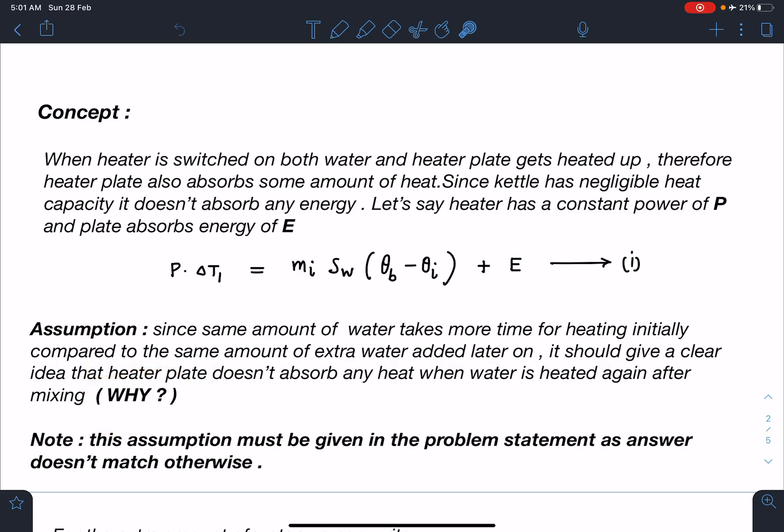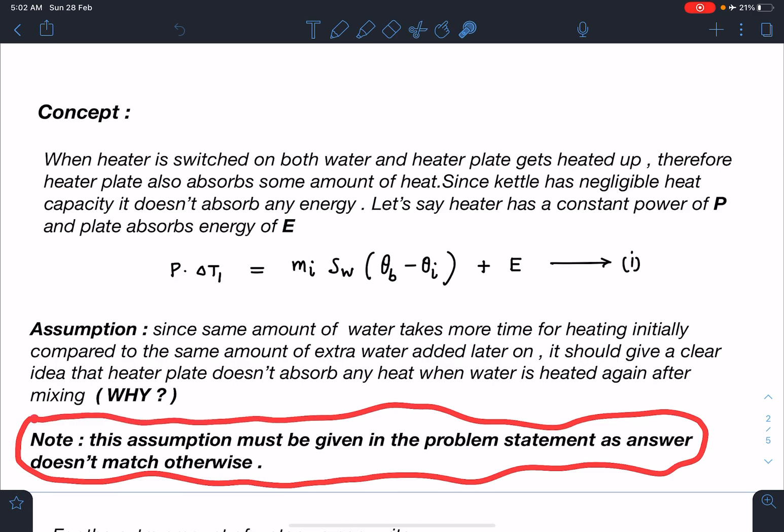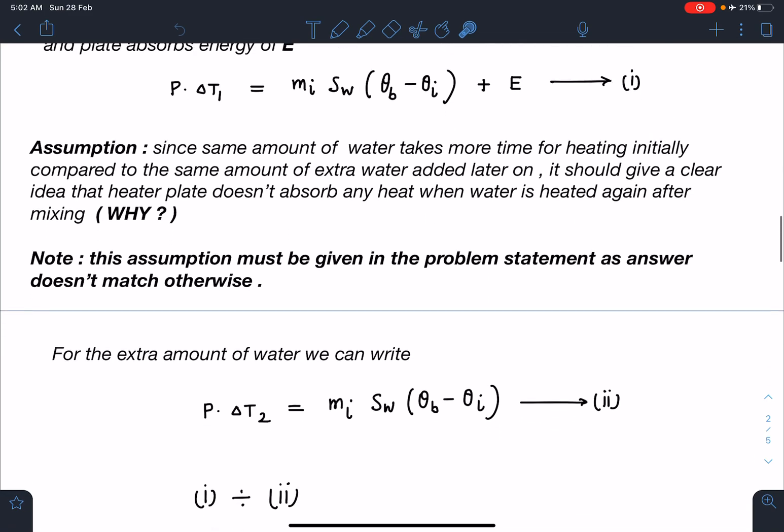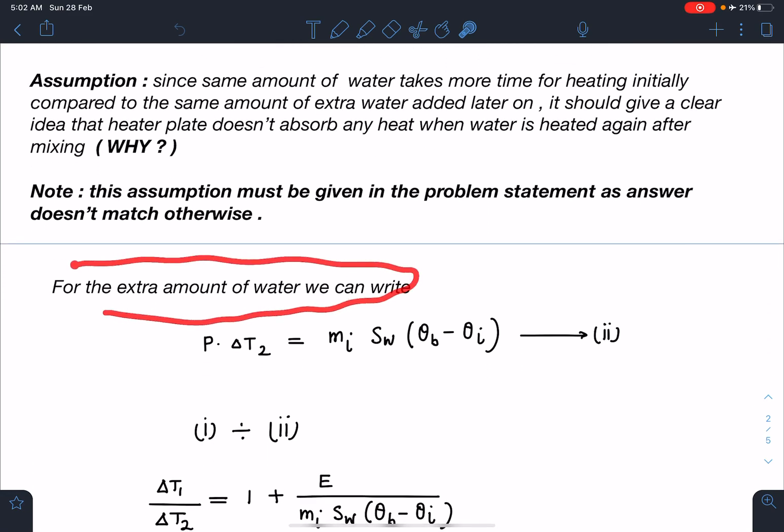In the second part, heater doesn't absorb any energy. Note: This assumption should definitely be given to you in the exam hall or in the problem statement. For the extra amount when we are adding water at zero degrees, one method could be to find the new temperature of mixed water and then proceed for combined mass. Instead this is far easier because the initial water is already at 100 degrees. So whatever extra amount of heat we are supplying is going directly to the water which was at zero degrees. Definitely P·Δt₂ must equal m_i·s_w·(θ_boiling - θ_initial).